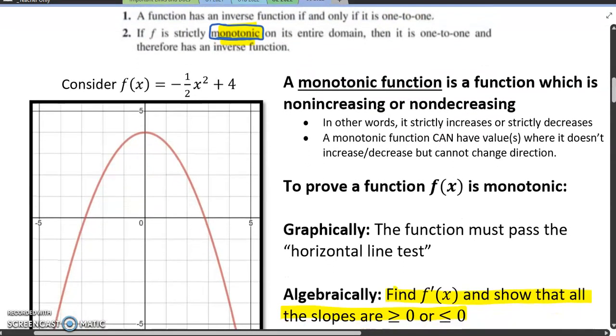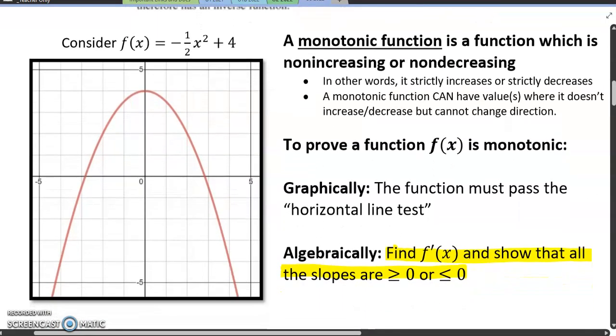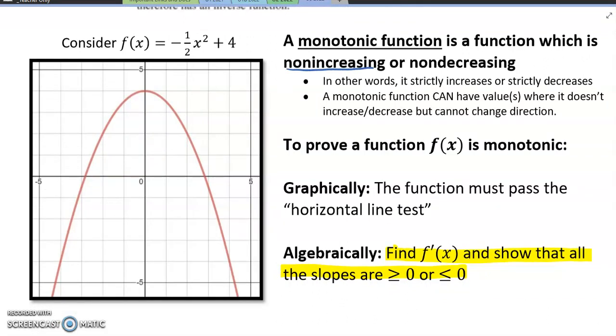So what does monotonic mean if you need a review or a refresher? A monotonic function is a function which is non-increasing or non-decreasing. Now that seems sort of backwards, wouldn't you just say that it only increases and only decreases? And that's pretty much what it means. In other words, it can strictly increase or strictly decrease, but here's the caveat I want you to remember here that I'm circling. A monotonic function can have a value where it doesn't increase or decrease, but ultimately it cannot change direction.